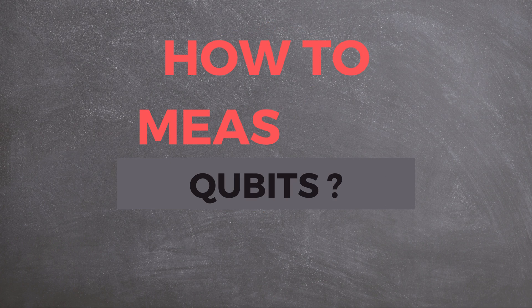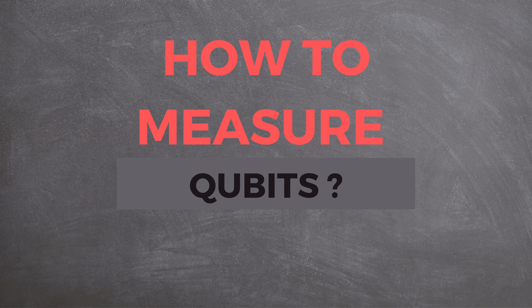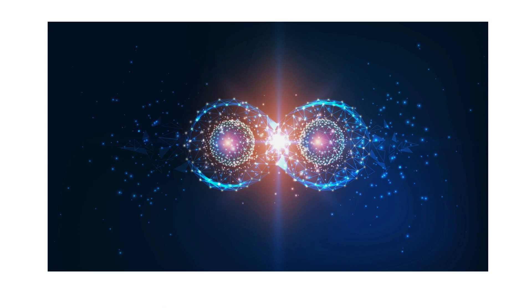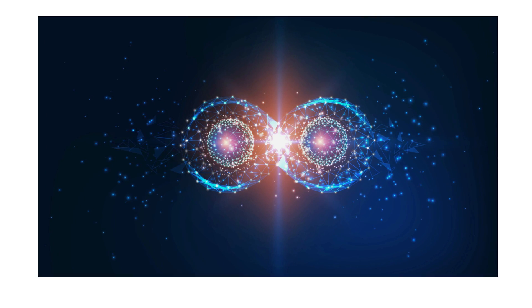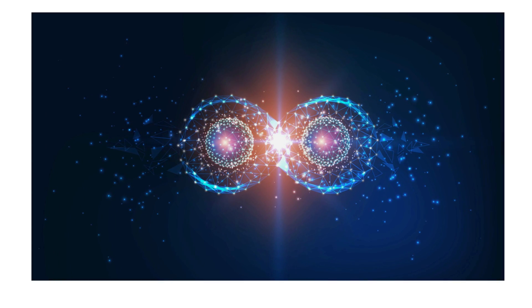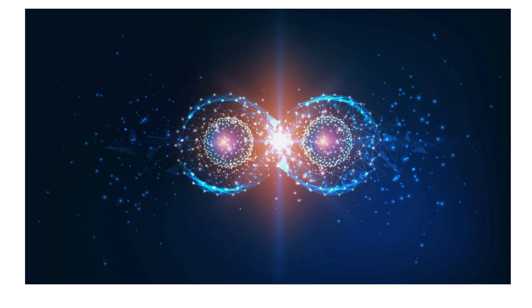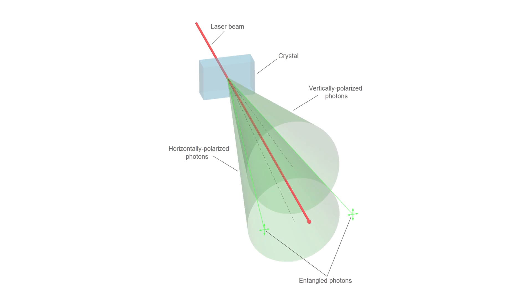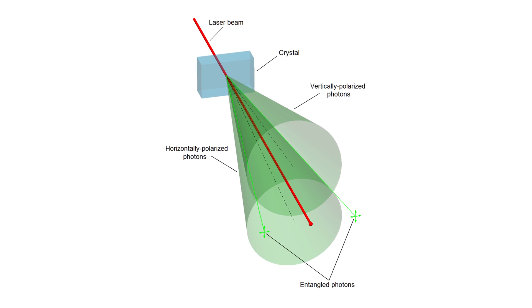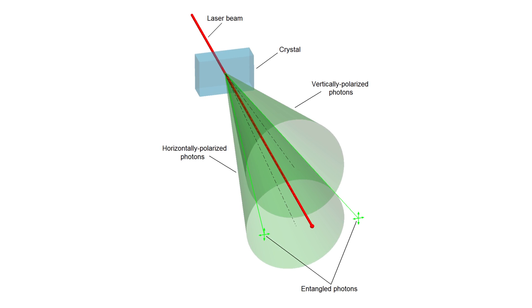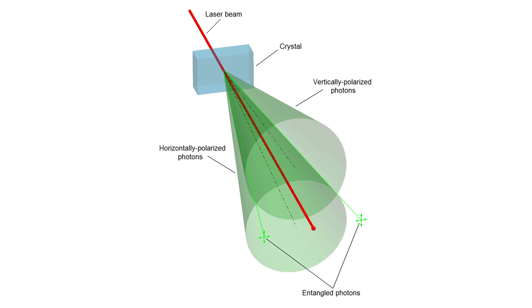But how do we measure qubits? That's where another strange phenomenon of quantum mechanics comes into play: entanglement. When two particles become entangled, their states become linked so that the state of one particle depends on the state of the other. This means that if we measure one entangled qubit, we can instantly know the state of the other entangled qubit, no matter how far apart they are.